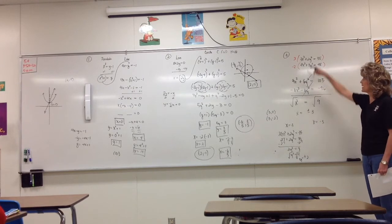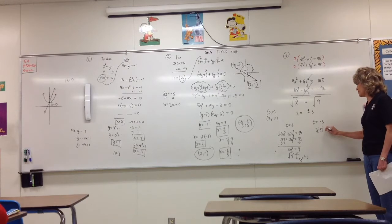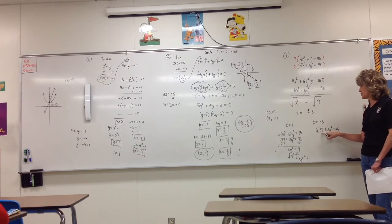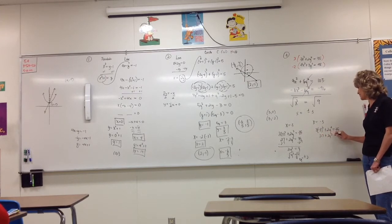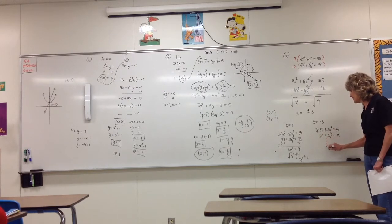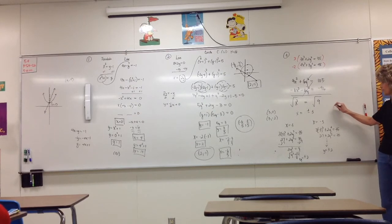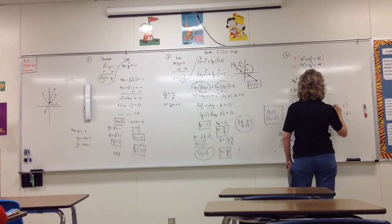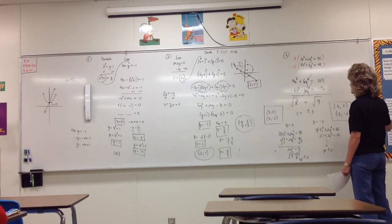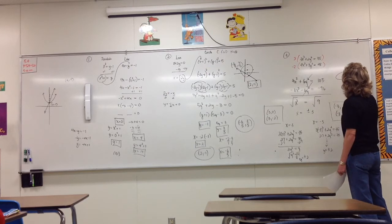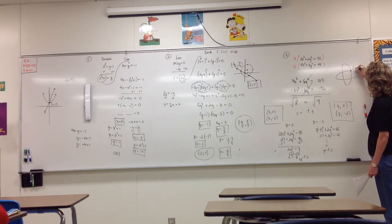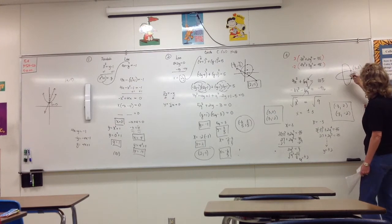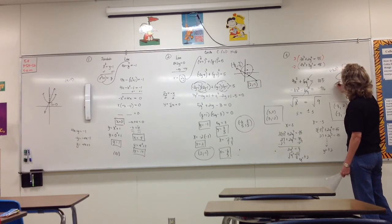If x is negative 3, plugging back in gives negative 3 squared, which is still 9, so 27 plus 2y squared equals 35 — exactly the same. We again get y equals plus or minus 2, giving two more ordered pairs: (negative 3, 2) and (negative 3, negative 2). So this system has four solutions, and if graphed, the two ellipses intersect at all four of those points.